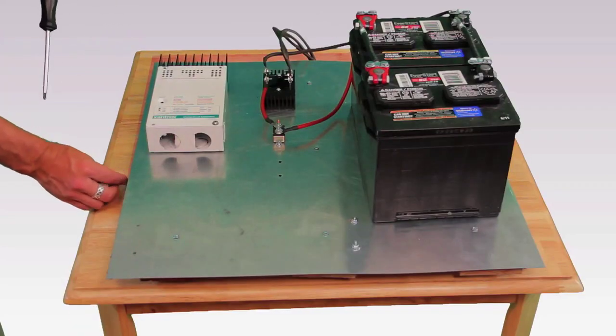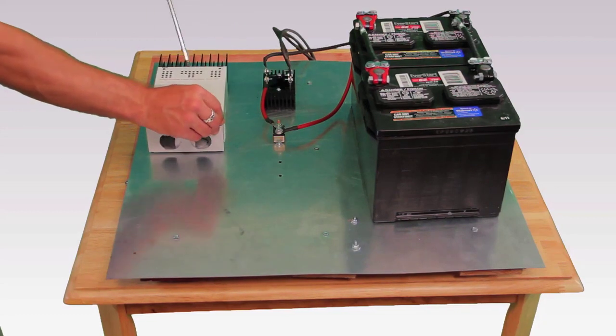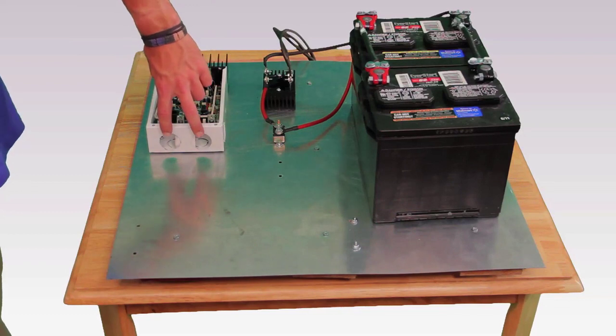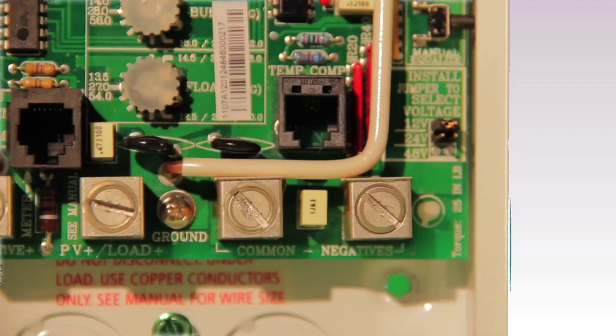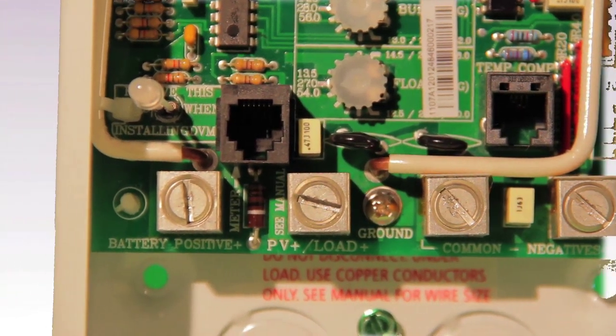Next we're going to open up the DC controller. First remove the four screws on the faceplate. Remove the appropriate sized metal plug for the conduit you're using. On the bottom you will see four terminals for connecting to your C60 DC charge controller.